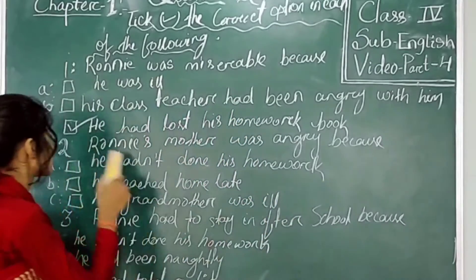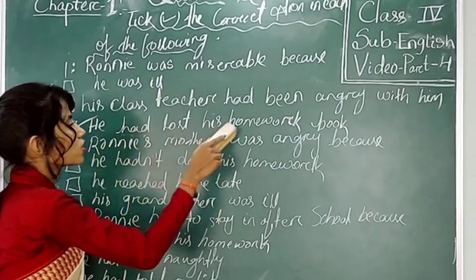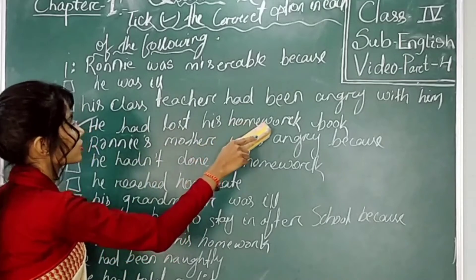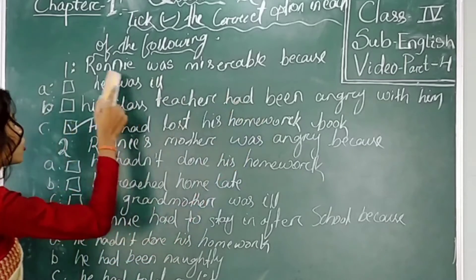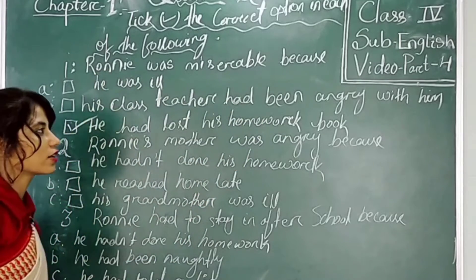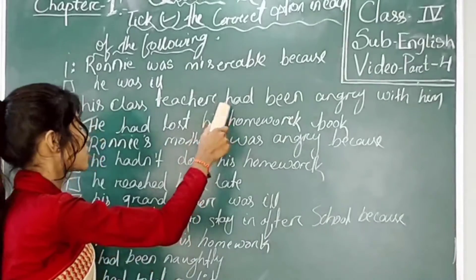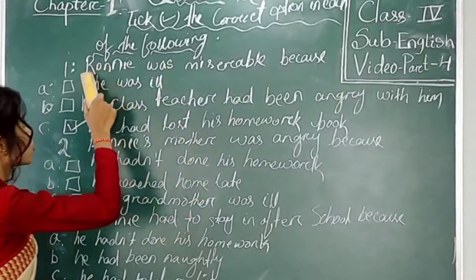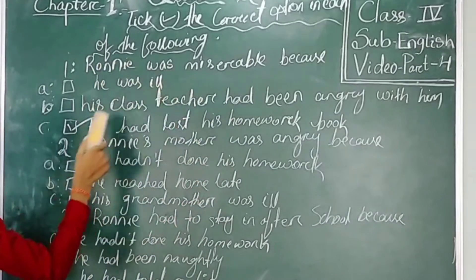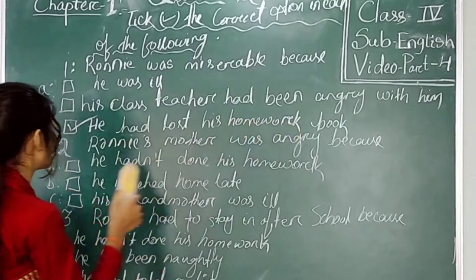That's right — this is the correct answer. He has lost his homework book, that's why Ronin was scolded by his class teacher. So Ronin was miserable because he has lost his homework book.